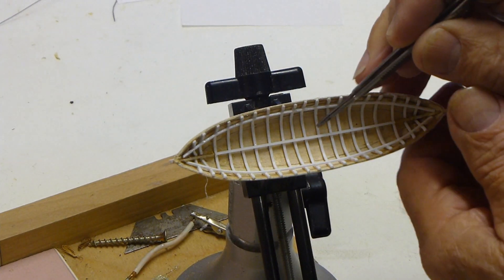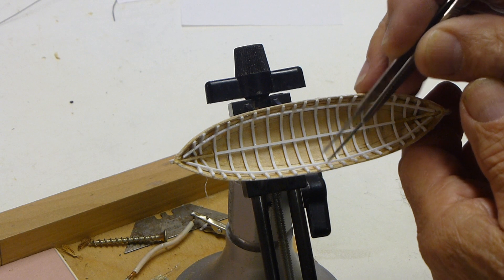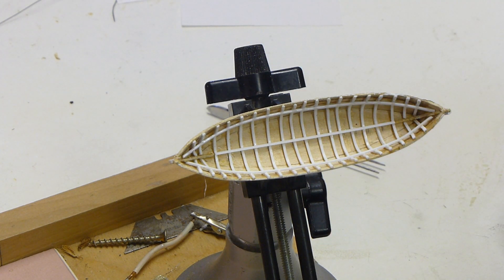Here you can see all the frames in position, and also the keelsum and riser. The riser will be supporting the seats, for example.